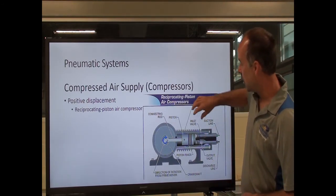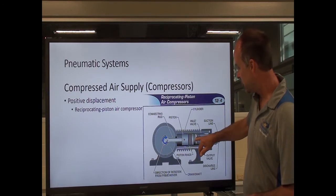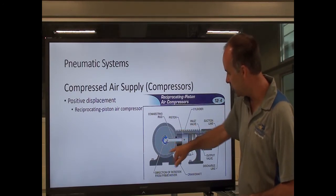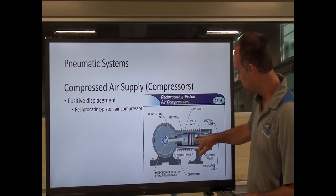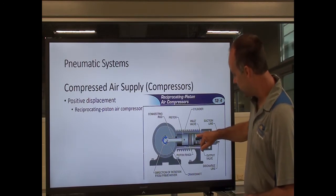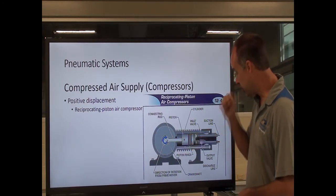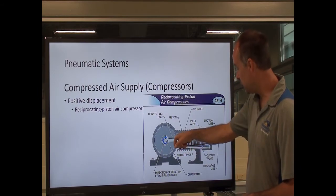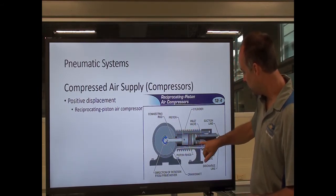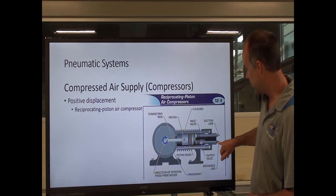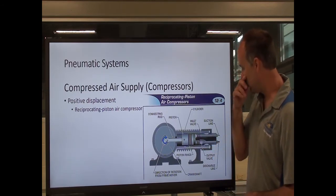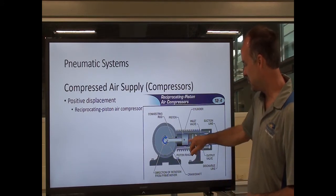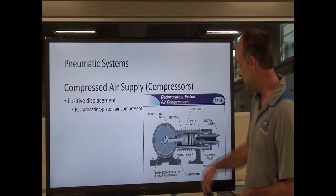A reciprocating piston compressor — essentially when the prime mover is spinning, it's pulling the piston in and out. As the piston draws back, you open the intake valve and allow air to be drawn in. When the piston comes back out, that valve closes and the other one opens, allowing compressed air to be sent to the receiver. It's much like an internal combustion engine, except instead of the piston driving the crank, the crank is driving the piston.